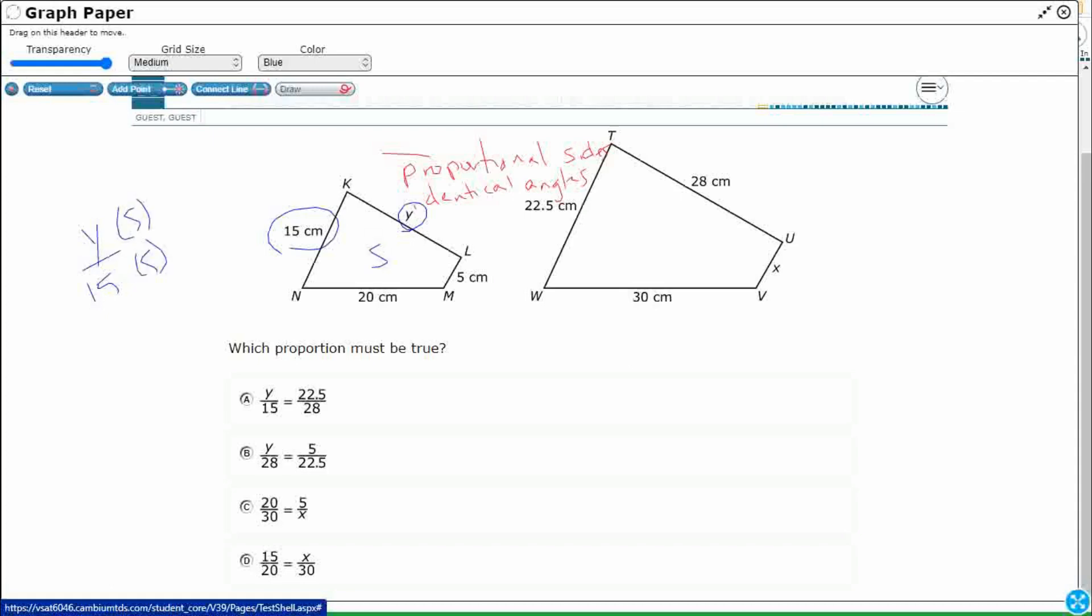I'm calling this one the small one, this one's the large one, which is fine. So this y connects with that 28, right? So we would need the 28, that's the large. That 28 is connected to that y, and that 15 is connected to that 22.5. That would work.